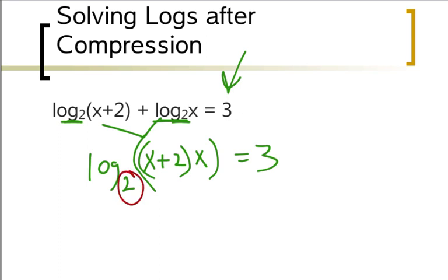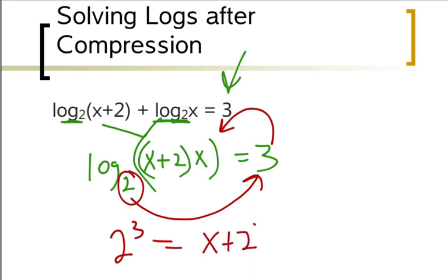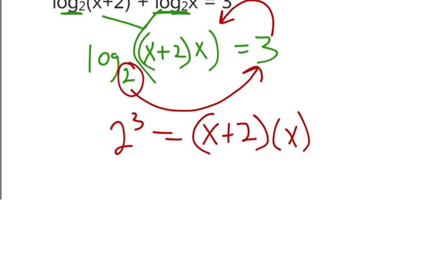This time I can't just drop the logs. This time I actually have to take my 2 and raise it to the 3rd power, so 2 to the 3rd. In other words, I'm going exponential, turning into exponential form, equals this x plus 2 times x. The first thing I had to do was rewrite it as a single log and then I can go exponential. Now I need to work it out. 2 to the 3rd is 8, equals, I've got to distribute this, so it's x² plus 2x.